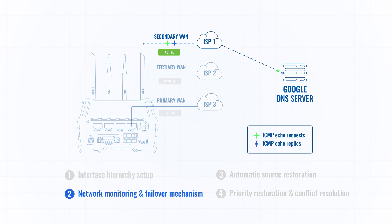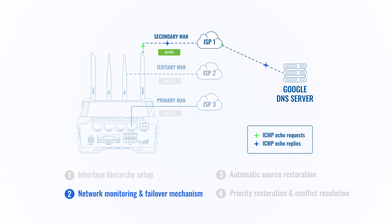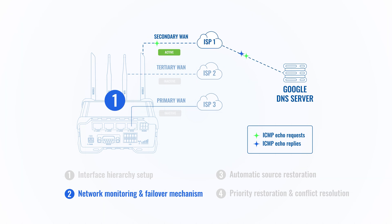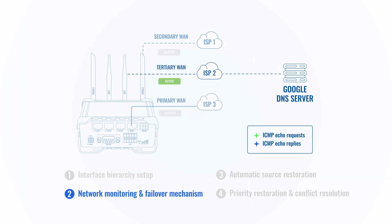In this situation, the router loses internet access from the primary source, making the failover automatically switch to the secondary source, which is mobile connectivity. And if that fails too, it will switch to the last resort of internet connectivity — Wi-Fi.